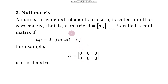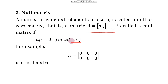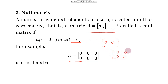A matrix in which all elements are 0 is called a null matrix or zero matrix. In generalized notation, A = [a_ij] of order m by n is called a null matrix if a_ij = 0 for all i, j, meaning every element is zero. For example, a 2 by 3 matrix of all zeros, or a 1 by 2 matrix of zeros, or a 2 by 2 matrix of all zeros — all of these are null matrices.